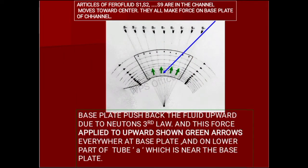Particles of ferrofluid S1 through S9 are in the channel and move toward the center. They all make force on the baseplate of the channel. The baseplate pushes back the fluid upward due to Newton's third law. This force is applied upward, shown by green arrows everywhere at the baseplate and on the lower part of the tube which is near the baseplate.